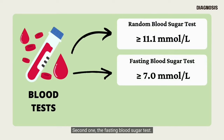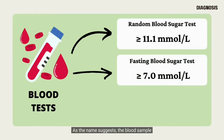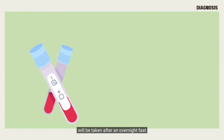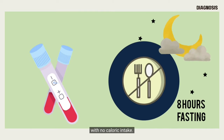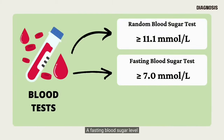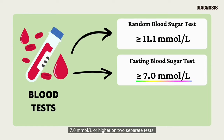The second test is the fasting blood sugar test. As the name suggests, the blood sample will be taken after an overnight fast, which means at least 8 hours with no caloric intake. A fasting blood sugar level from 5.6 to 6.9 millimoles per liter indicates pre-diabetes. Meanwhile, if your fasting blood sugar level is 7 millimoles per liter or higher on two separate tests, you have diabetes.